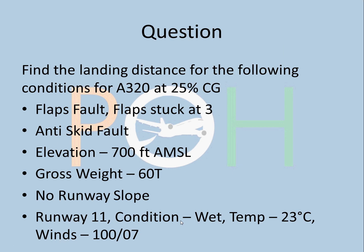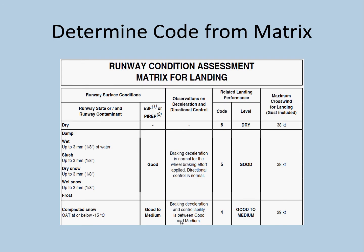Please note down this question: find the landing distance for the following conditions for the Airbus A320 at 25% CG. Fault 1: flaps fault — flaps are stuck at 3. Fault 2: anti-skid fault. These are the two faults — several failures. Elevation is 700 feet AMSL, gross weight 60 tons, no runway slope, runway 11, conditions are wet, temperature 22°, wind 100° at 07 knots. Kindly note this down; all of it is from the QRH, so keep the QRH handy.